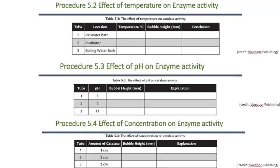In procedure 5.3, we're going to examine the pH optimal for the enzyme catalase. Different conditions can cause proteins to denature. If we put the enzyme at a temperature or pH that's not optimal, it can influence the bonds and affect attractions between different ions. There are a lot of things that can happen when you put an enzyme or any molecule in a pH that is outside of their optimal.